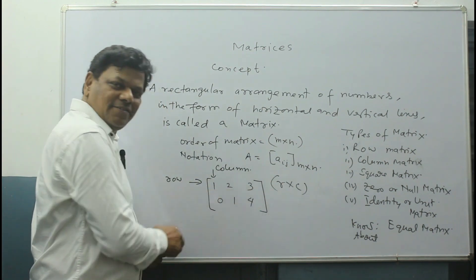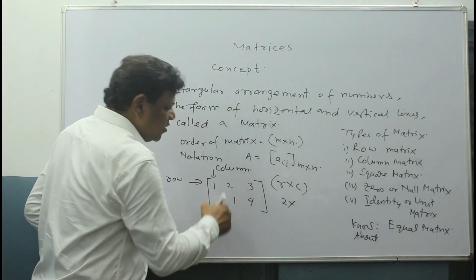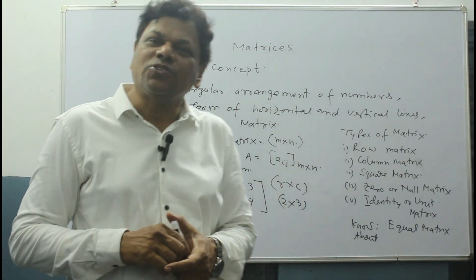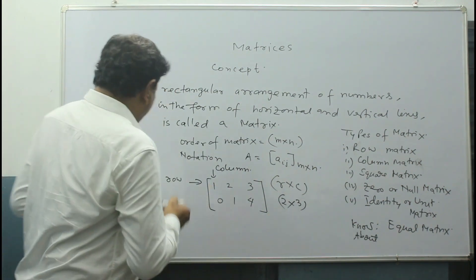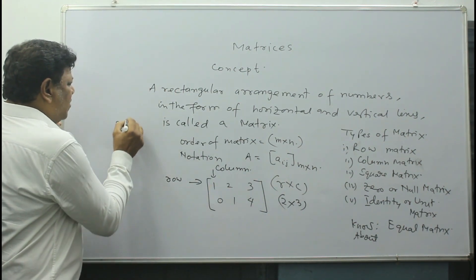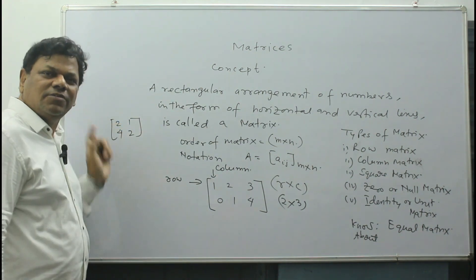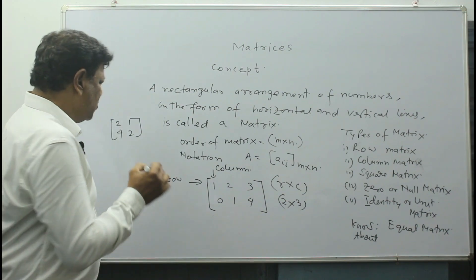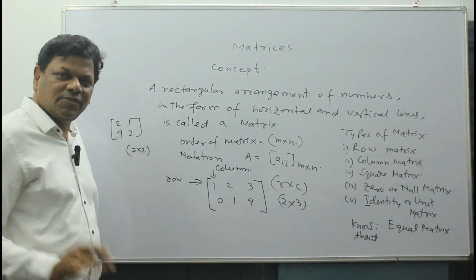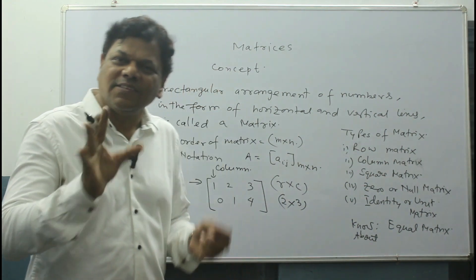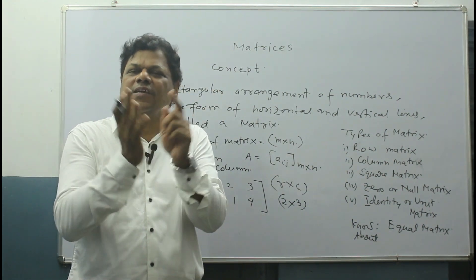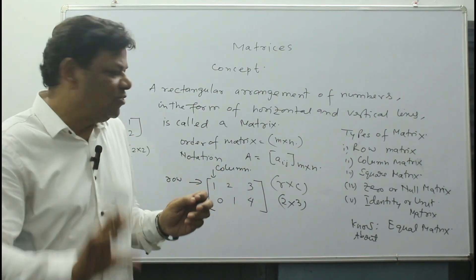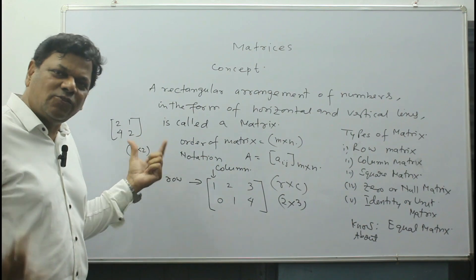So how many rows here? There are 2 rows and how many columns here? 3. So what is the order of matrix? 2×3. If 2 and 4 are given and 1, 2 given, how many rows? 2. And how many columns? 2. What is the order of matrix? 2×2. You count how many rows, how many columns, and then write it down in product form—that is the order of the matrix.